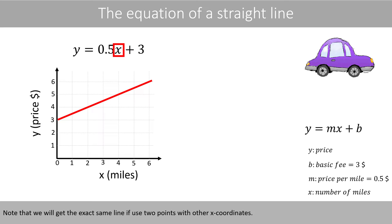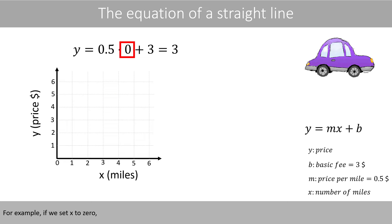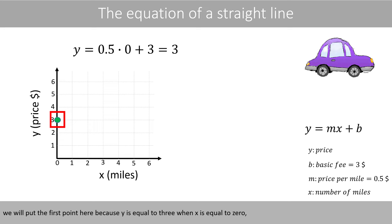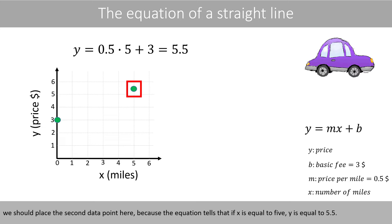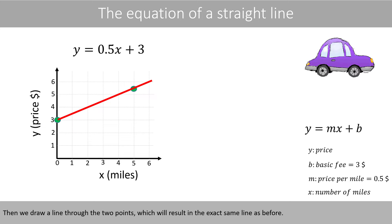Note that we will get the exact same line if we use two points with other X coordinates. For example, if we set X to 0, we'll put the first point here because Y is equal to 3 when X is equal to 0. And if we set X to 5, we should place the second data point here, because the equation tells us that if X is equal to 5, Y is equal to 5.5. Then we draw a line through the two data points, which will result in the exact same line as before.